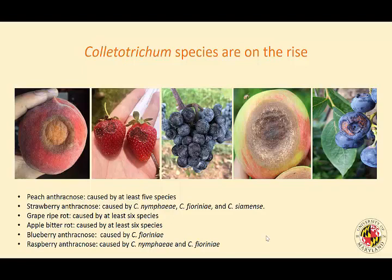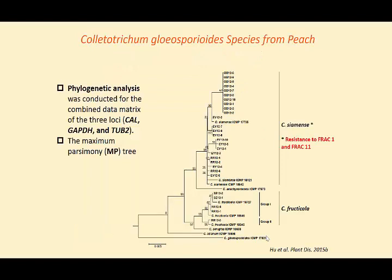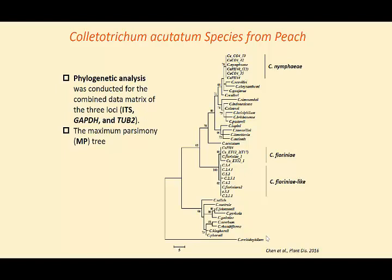A couple years ago, there was an outbreak of peach anthracnose in South Carolina. We collected isolates from peach fruit and found resistance to FRAC1 and FRAC11 fungicides in some isolates. There are multiple species involved: Colletotrichum siamense, C. fructicola, and the Colletotrichum gloeosporioides complex. We only found resistance in siamense, not in fructicola. Within the acutatum complex, there are at least three Colletotrichum species causing peach anthracnose.